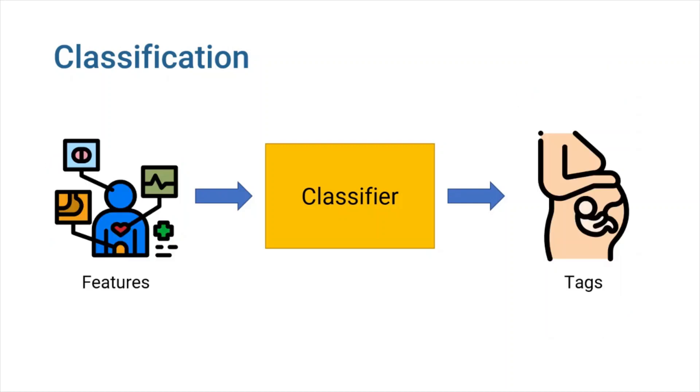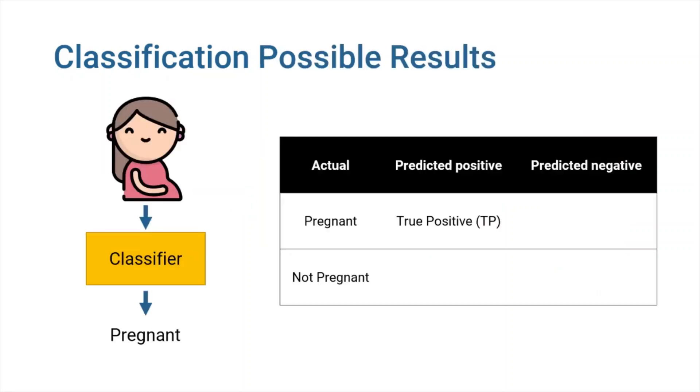Now that you know what classifiers do, assume that we have created a binary classifier that, based on a person's physiological features, determines whether they are pregnant or not. A binary classifier like what we have developed can have four classification results.